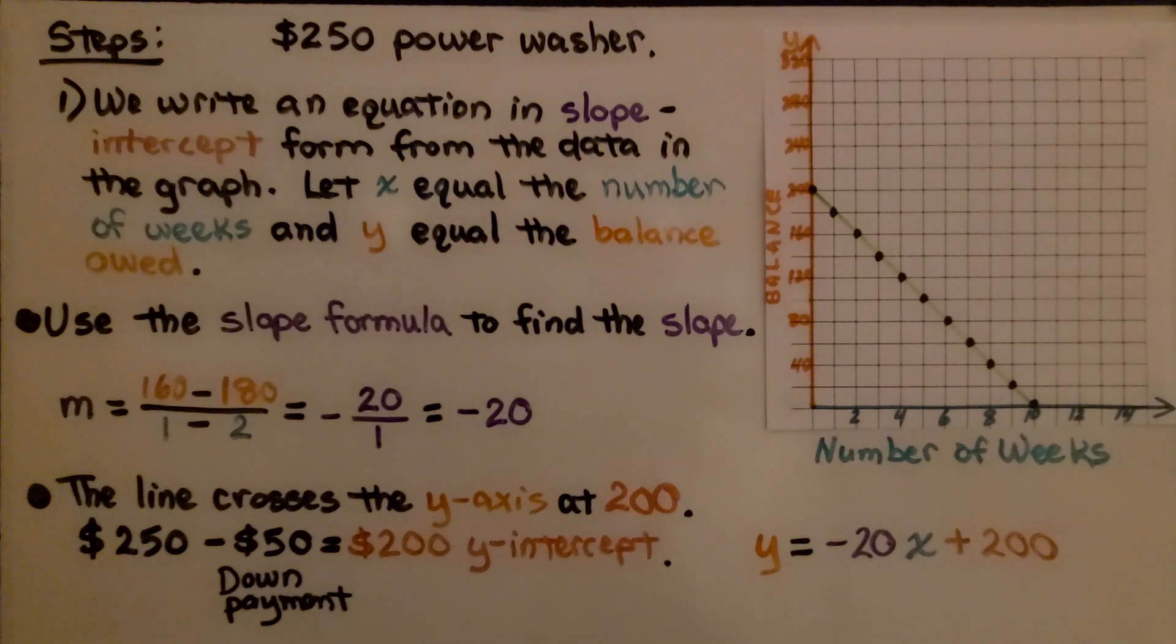Our equation, because we have our slope and y-intercept now, would be y equals negative 20x plus $200.